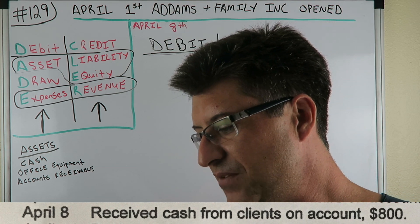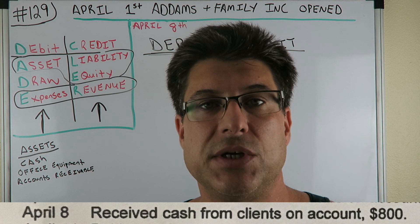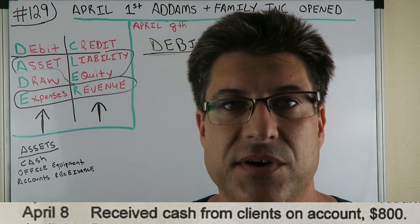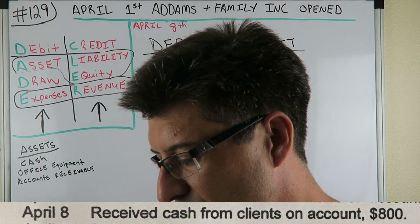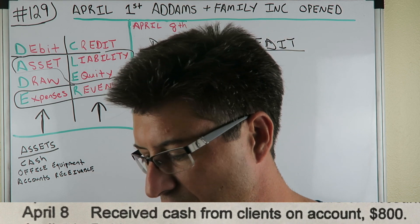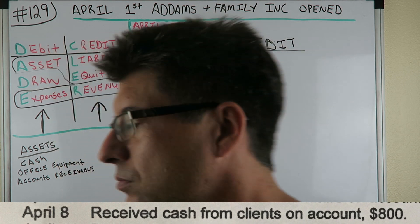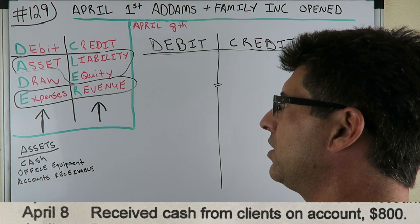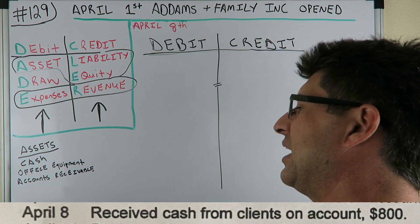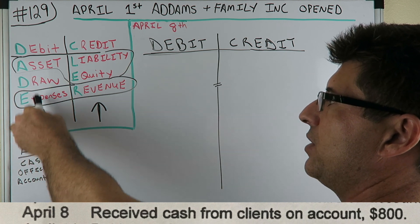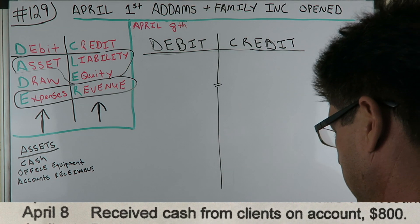The transaction is: received cash from clients on account, $800. I always say let's get the cash done first — we'll get half of it right. We know cash is an asset. We received cash, so our cash account is going up in value. If an asset is going up in value, we debit it. So we're going to debit cash for $800.